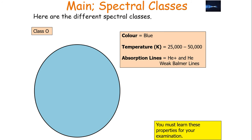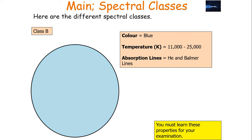Here are the different spectral classes you must memorize for your examination. Class O stars have a blue colour and a temperature between 25,000 and 50,000 K. The absorption lines are in helium ions and helium atoms, and they have weak Balmer lines because most of the atoms are in the n=3 state. Class B stars are also blue, with a temperature between 11,000 and 25,000 K, and the absorption lines are in helium and the Balmer lines, as most electrons are at the right temperature to be in the n=2 state.